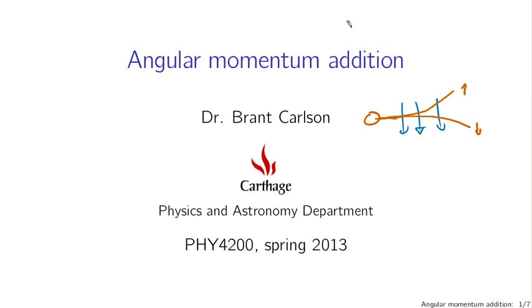That has to do with how angular momenta add together in quantum mechanics. I'm only going to be able to scratch the surface of addition of angular momentum. There's actually a lot of deep mathematics that goes in here, and you'll get a feel for some of that. But the simplest case, and what we're going to start with, is two spin one-half systems. Suppose I have two spin one-half systems, and I'd like to combine them together to find out the behavior of the total angular momentum, for instance.